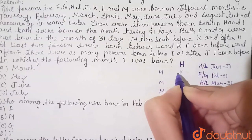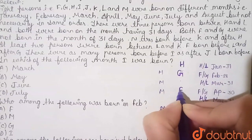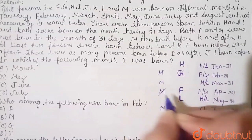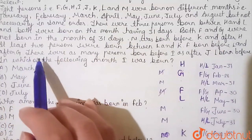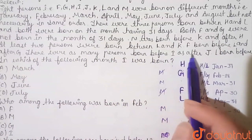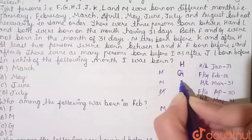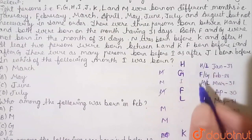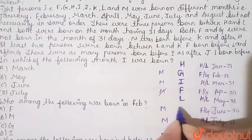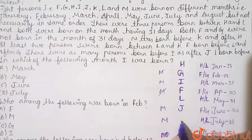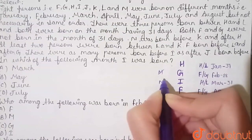G is placed first, then F comes after G and before L. That means M is not in that position. There were as many persons born before I as after J, meaning I and J are symmetrically placed. We keep I in a position such that the count before I equals the count after J. With J placed accordingly, the arrangement is now complete.